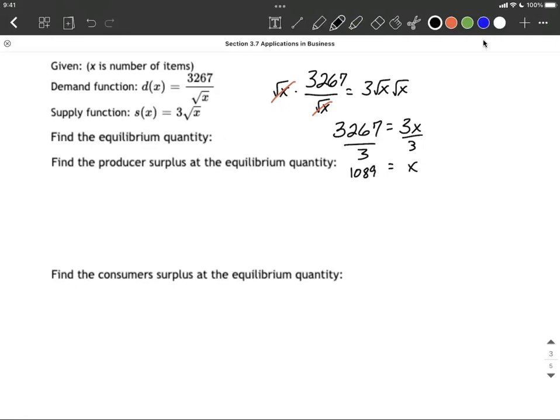So technically, 1089 would be that quantity Q. I'll put a Q star, because that's what our book does, is it uses Q star and P star for this ordered pair, the equilibrium point.